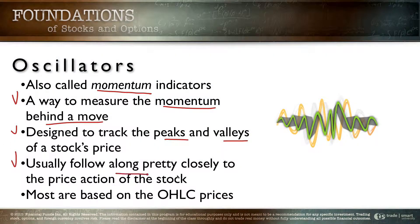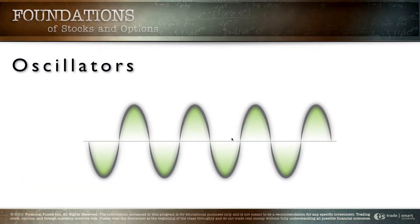Usually in most situations oscillators follow along pretty closely to what the peaks and valleys are doing. Sometimes they get out of sync, but for the most part they're very close. When we think about how they're calculated, almost all of them are going to be based on the open, high, low, and close prices, sometimes with volume filtered in, but mostly derived from a formula using OHLC data.